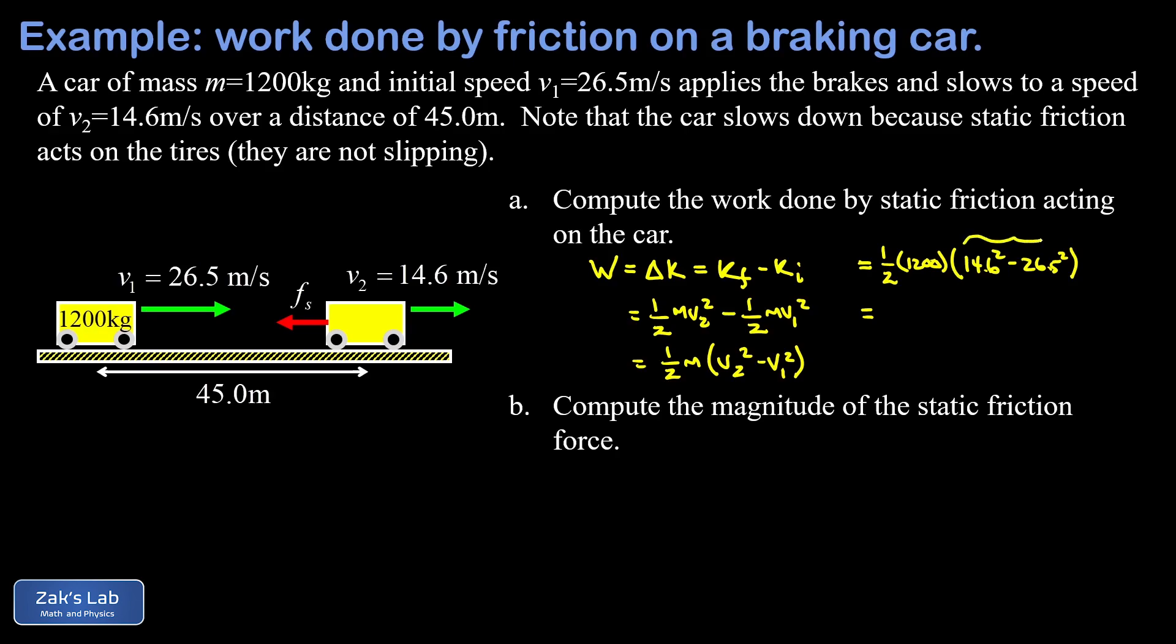You should notice even before plugging in the numbers that this is going to result in a negative amount of work. That makes sense because friction is removing energy from the system—it just caused the kinetic energy to decrease. To four significant digits, we end up with a work of negative 293,500 joules.